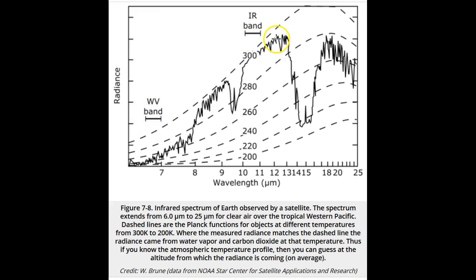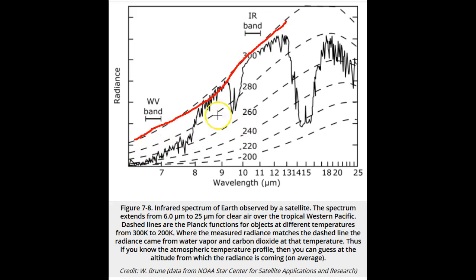The radiance depends on temperature, so once we know the radiance, we know the temperature of the object that is radiating. The Planck distribution function spectral radiance is plotted for curves of different temperatures from 200 Kelvin to 300 Kelvin.